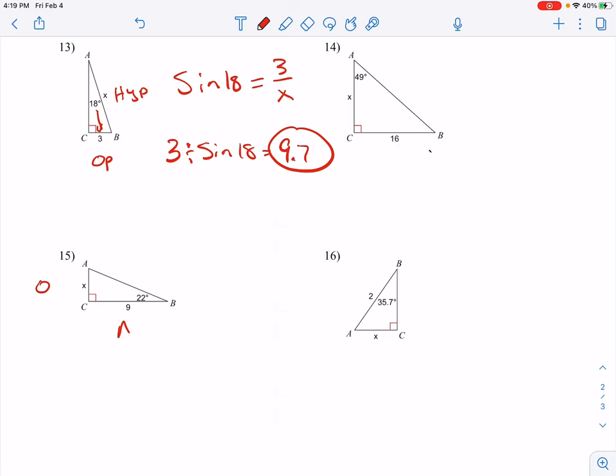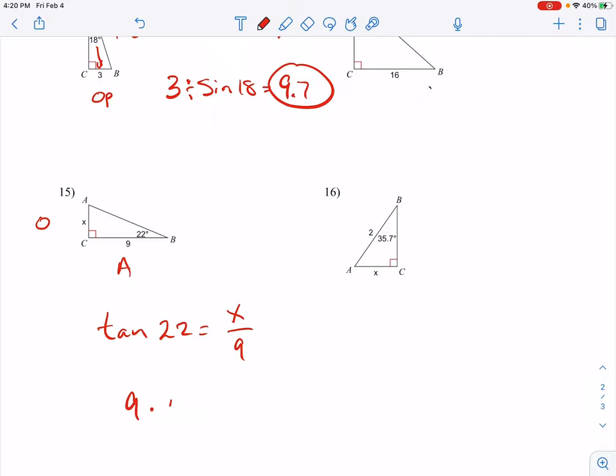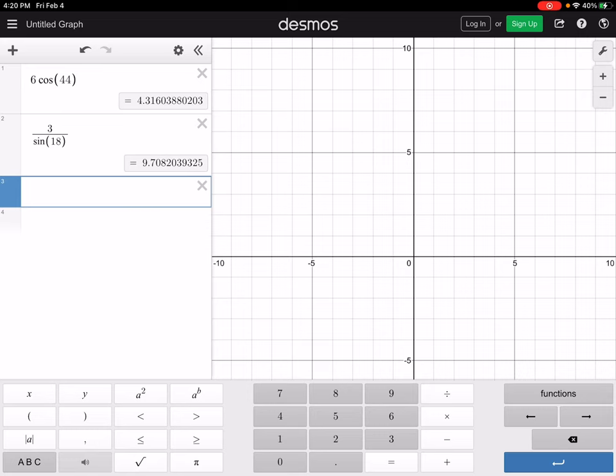You do 14. Number 15. We've got opposite, we've got adjacent. So, this is tangent. The tangent of 22 is equal to x over 9. x is up high. We multiply. That's 9 times the tangent of 22. So, about 3.6.